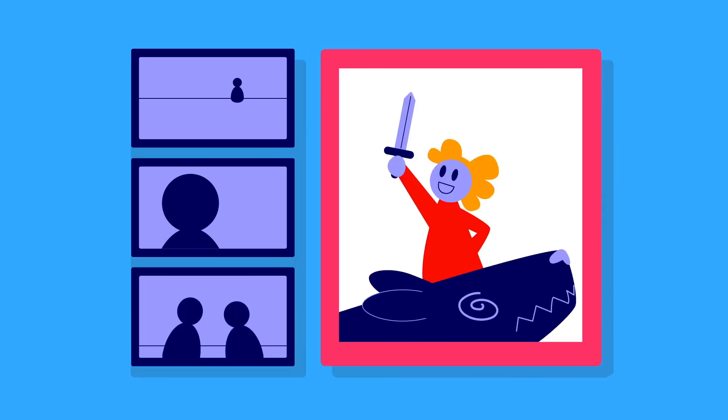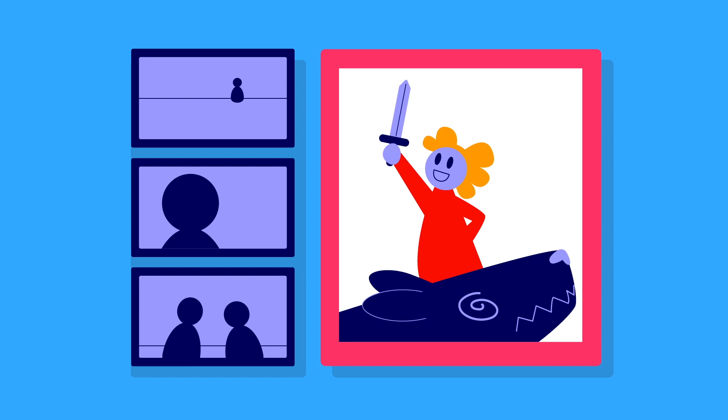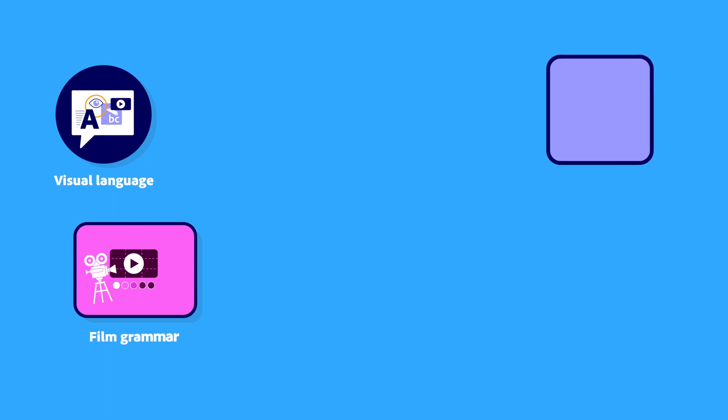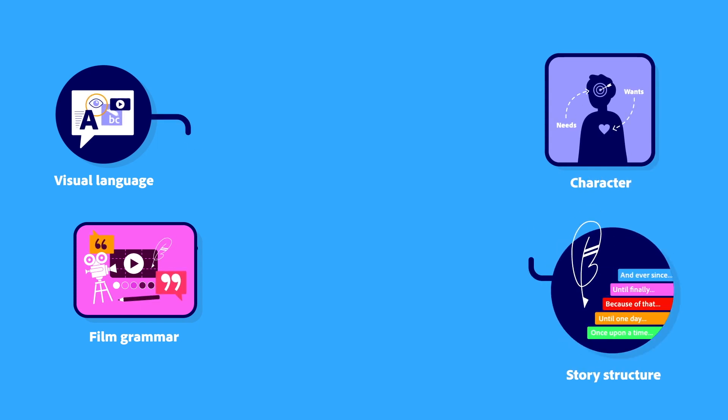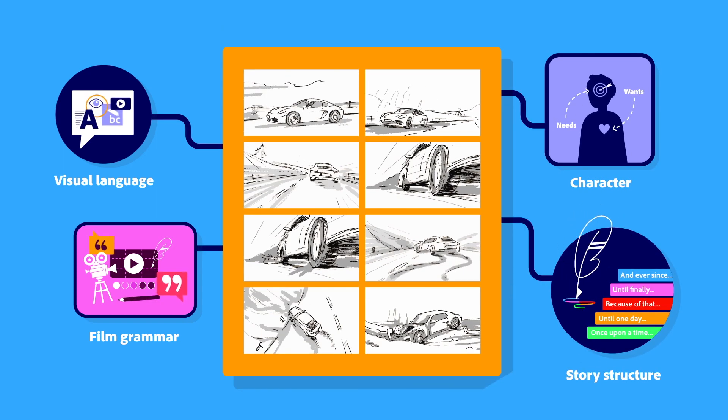Students learn how different shot types can influence the viewer's sense of tone, character, and conflict, and apply that understanding to bring moments from their own narratives to life. They also synthesize the principles of visual language, film grammar, character, and story structure to storyboard a full movie scene.